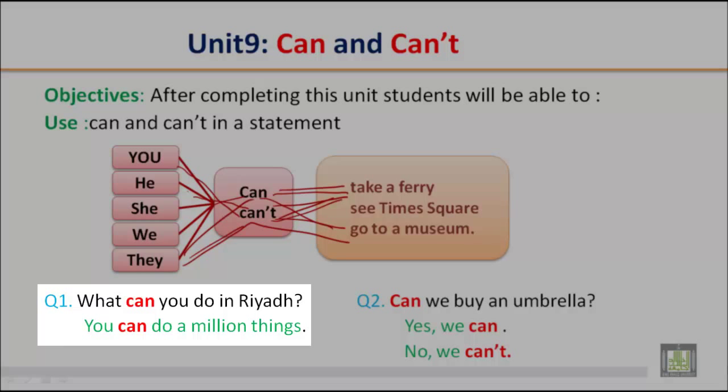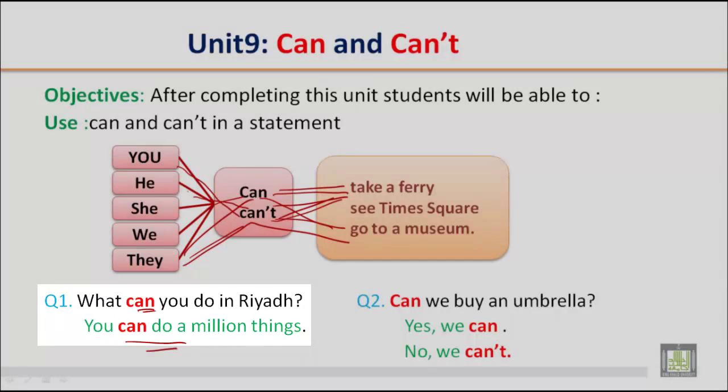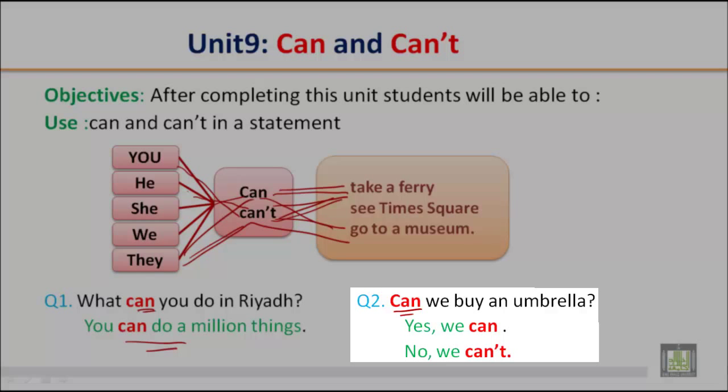Let's look at this question. What can you do in Riyadh? You can do a million things. That means he's asking about your ability. Can we buy an umbrella? Yes, we can. No, we can't.